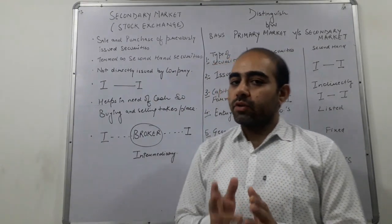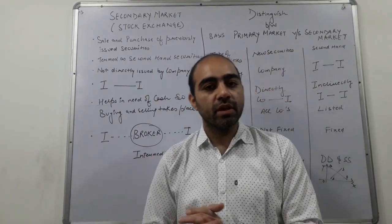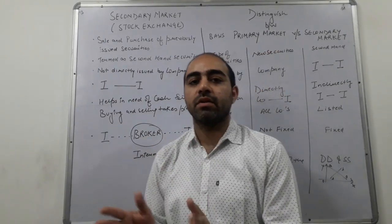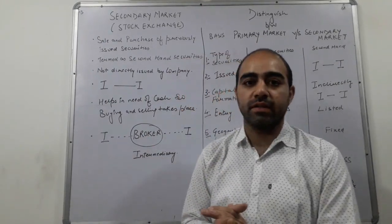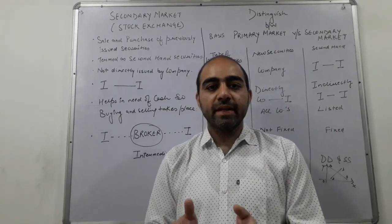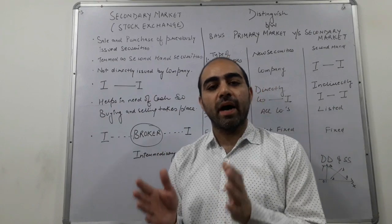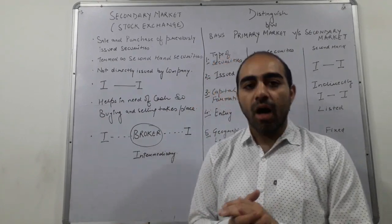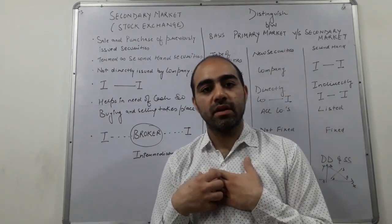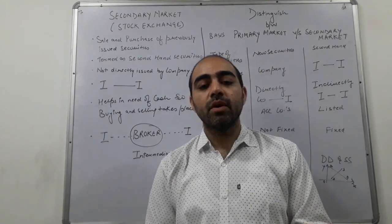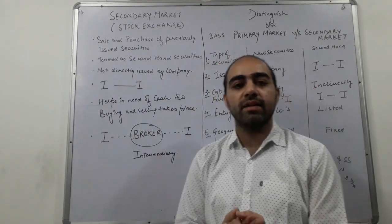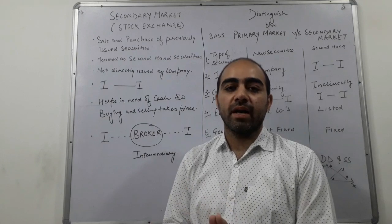Capital market is divided into two markets. Primary is the new issue market — new stock, new shares, new securities are launched. Then what is the secondary? Secondary is what happens when shares and securities are already listed in the company. Now there is an investor who has purchased shares but wants to trade — buy or sell. In that case, the need of a market is known as the secondary market.